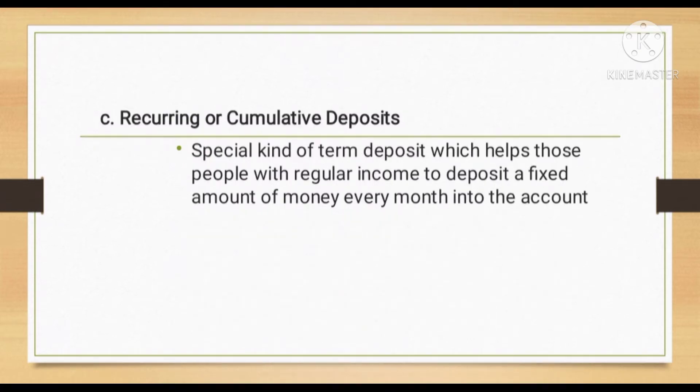The third type is recurring or cumulative deposits. This is a special kind of term deposit which helps those people with a regular income to deposit a fixed amount of money every month into the account.